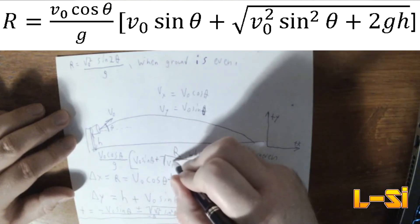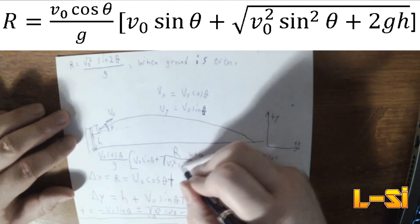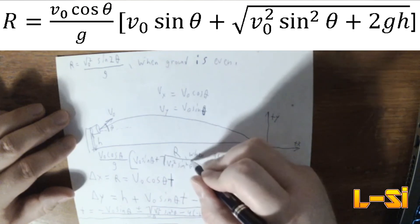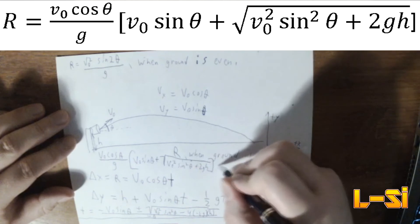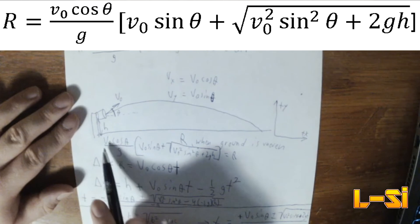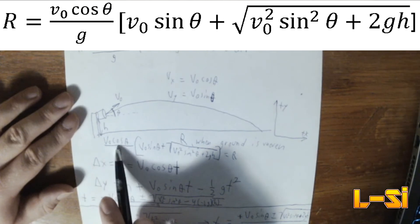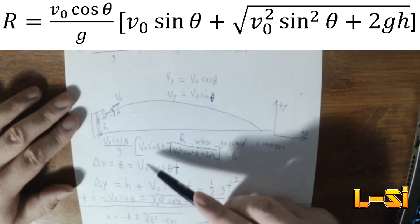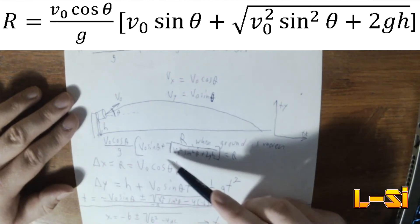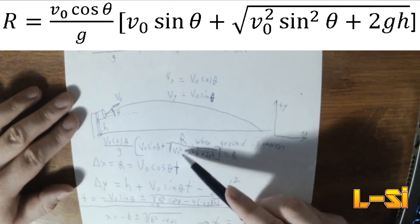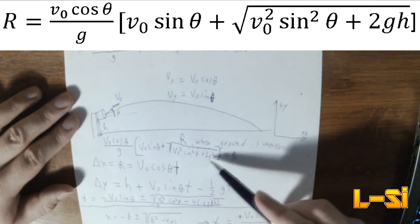Multiply that by the quantity your Y component plus this term here, which is V-naught squared sine squared of theta plus 2GH. I know that's a little hard to read too, but we're looking at V-naught times cosine of theta divided by G and that whole term multiplied by V-naught sine of theta plus the square root of V-naught squared sine squared of theta plus 2GH.